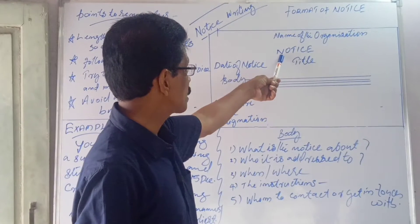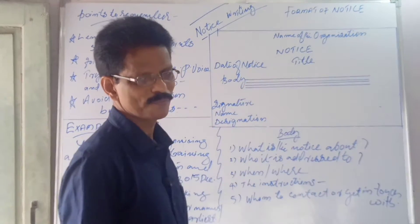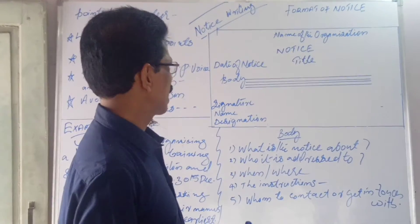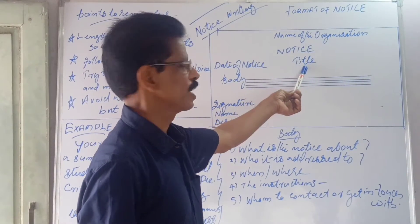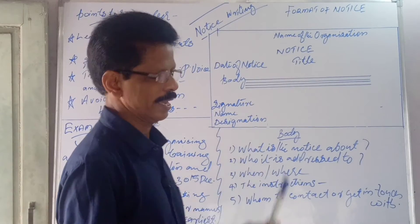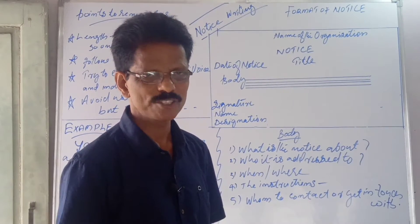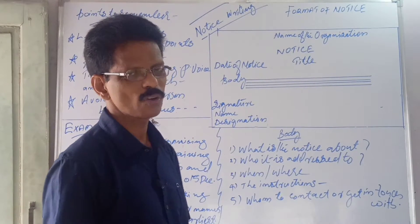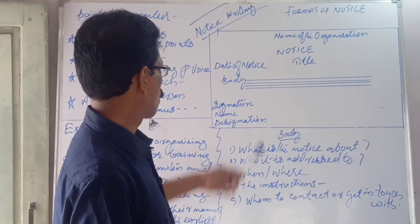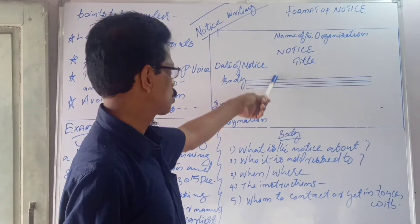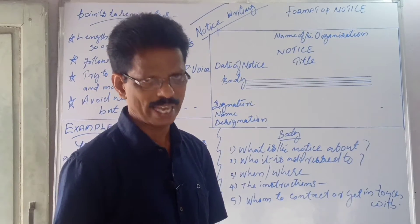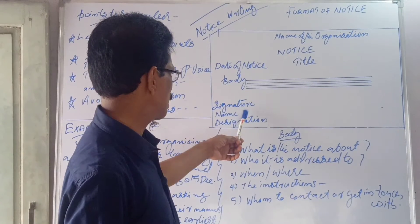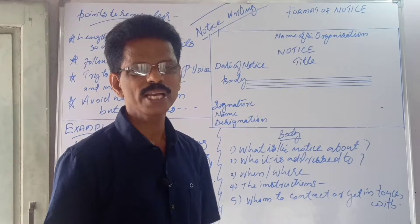Then write in capital letters: NOTICE. Then the title should be given — the subject matter as a title. Then the date of the notice should be given on the left side. Then the body of the notice. Then signature, name, and designation of whoever is issuing the notice.